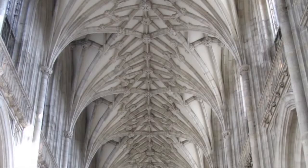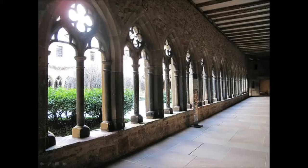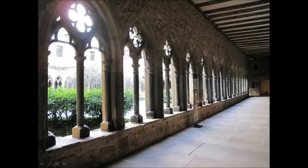The ribbed vault utilizes arching and intercepting stone ribs to support a vaulted ceiling surface composed of thin stone panels, thus reducing the weight of the vault.